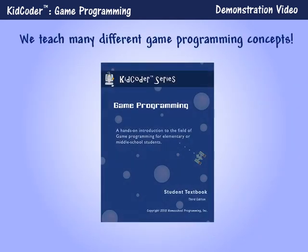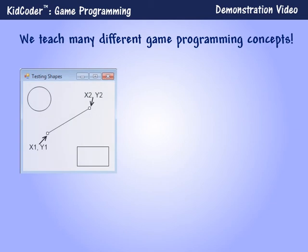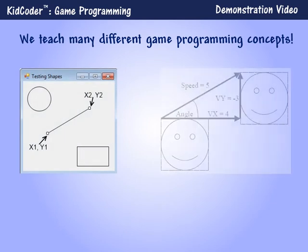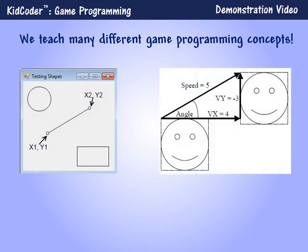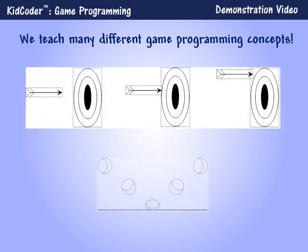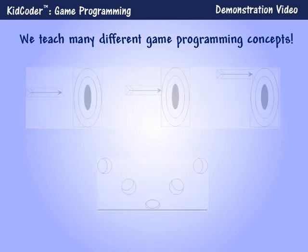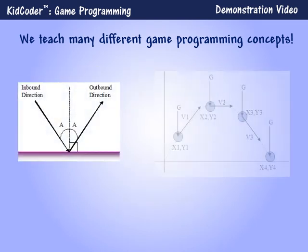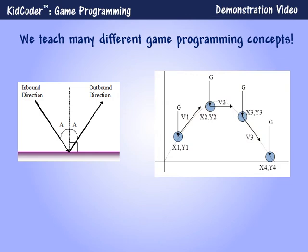The game programming course covers important game concepts used in many different types of games. We teach how to draw shapes on the screen and how to move objects around the screen. Students will also learn about collision detection and basic animation techniques. We'll also review some basic concepts of game physics, like reflection and gravity, which make game objects behave in a realistic manner.